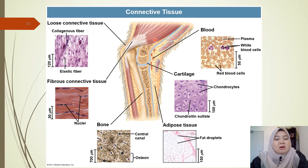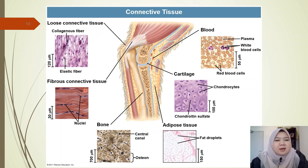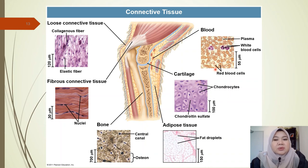Here are all six connective tissues present in animals: loose connective tissue, fibrous connective tissue, bone, adipose tissue, cartilage, and blood.